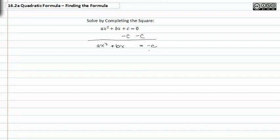Next, I have to find the leading coefficient of the x squared term and divide everything by that value. Once that's done, I have x squared plus b over a times x equal to negative c over a.